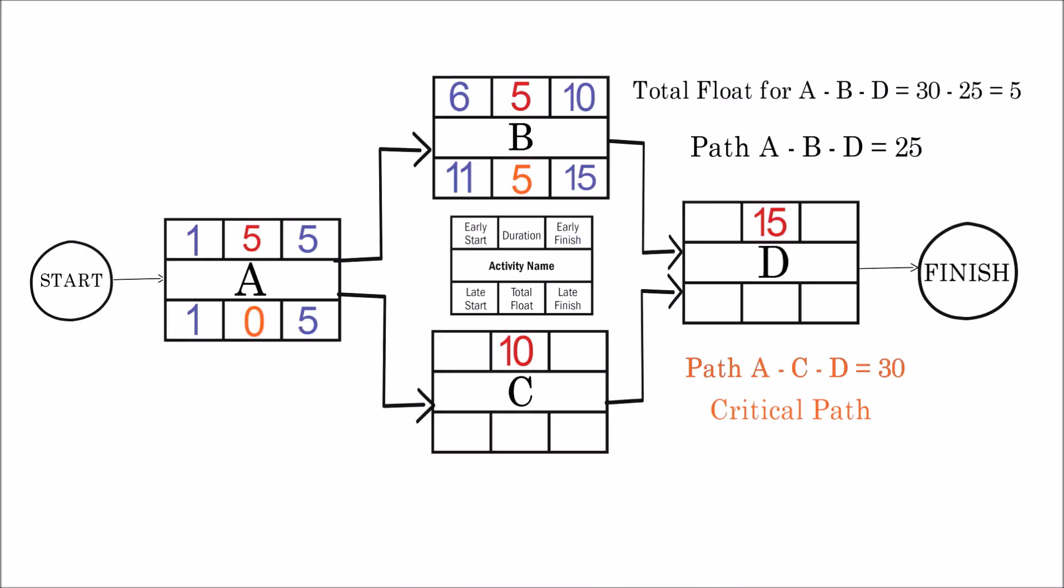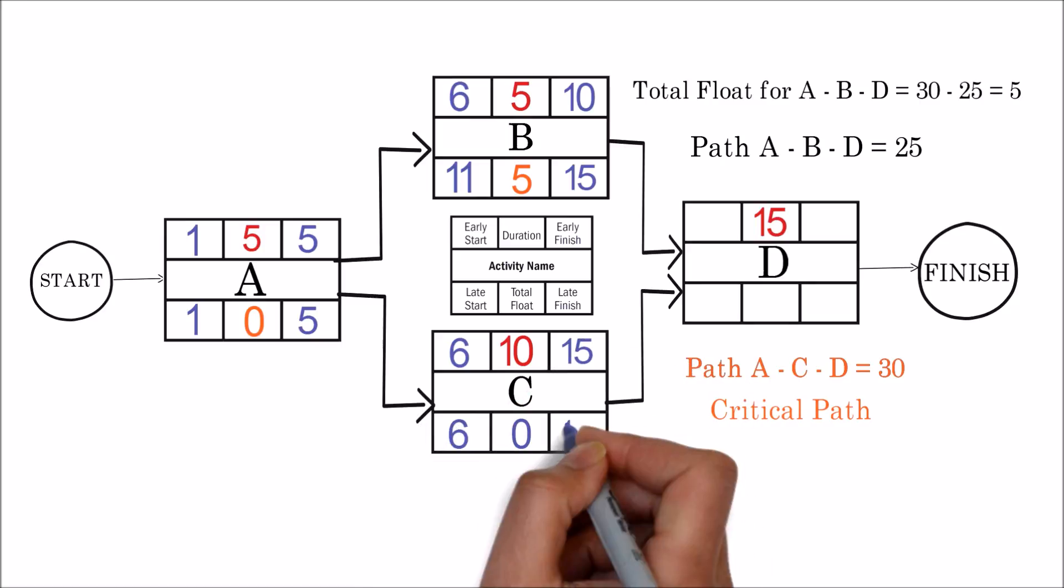Let's move to activity C. Since activity C is part of the critical path, there is no float available. Hence the early and late start dates are the same, and the value is 6. Similarly the early and late finish days will be 15.